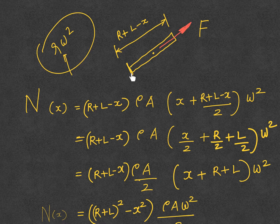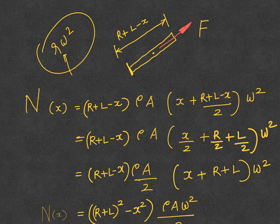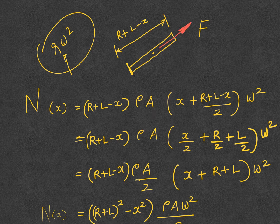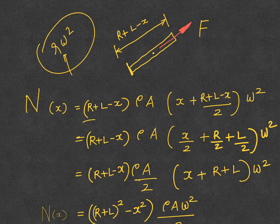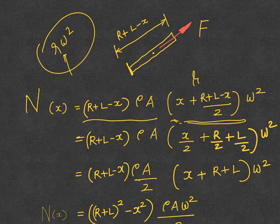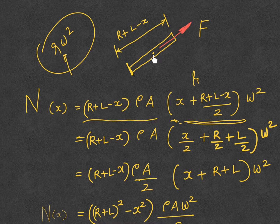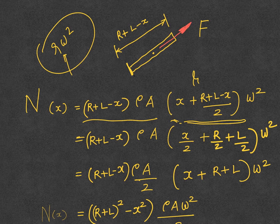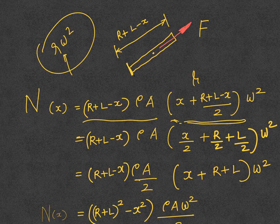For the time being, the force is mass times acceleration. Mass is the length times the area times the mass density ρ. This expression represents the mass. Then this represents the radius of the centroid of this chunk of mass. The center of gravity is at a distance of x + (R+L-x)/2. That's how the r is computed. Then ω² where ω is the angular velocity.